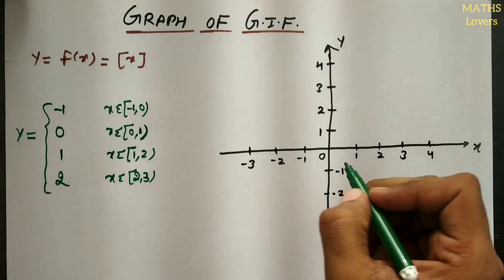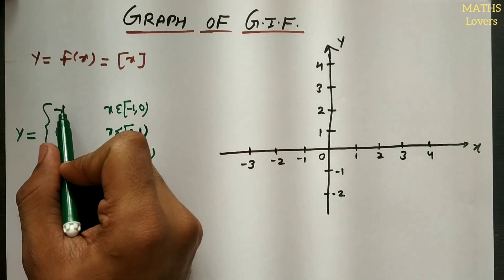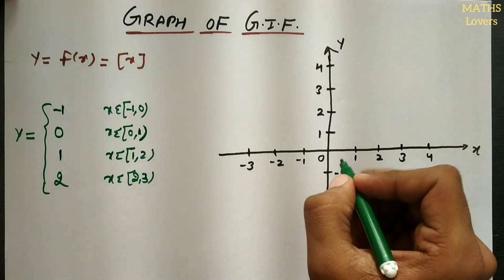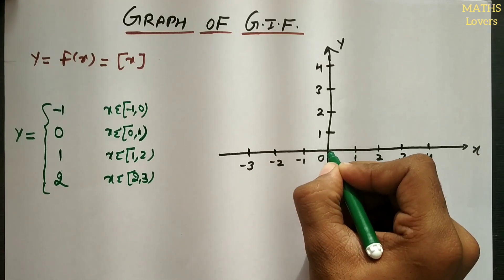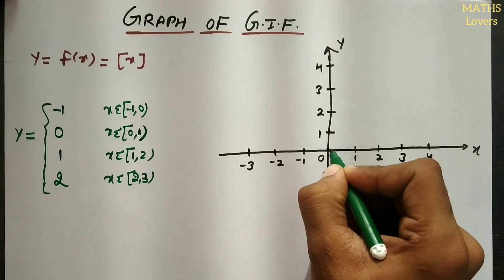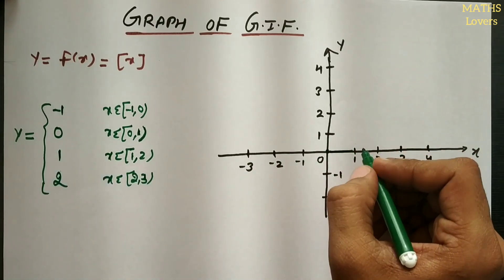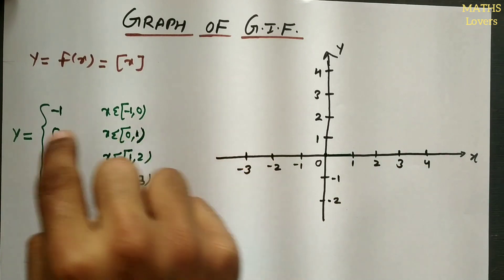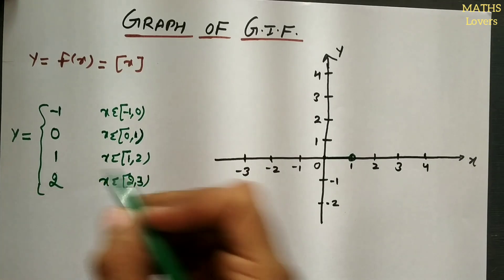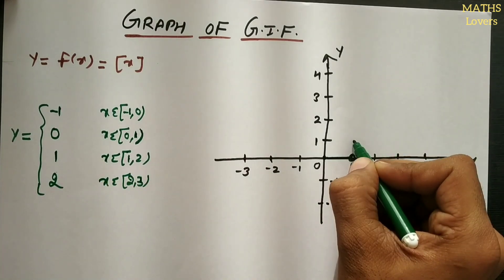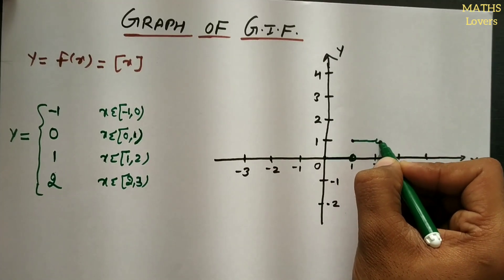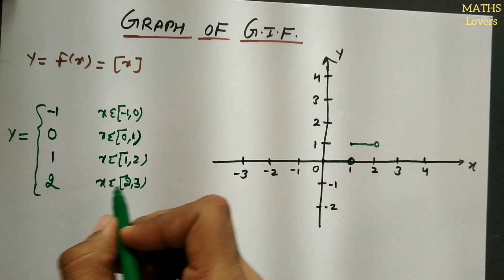Between 0 and 1, the value of y is 0, so the graph is a horizontal line at y = 0. Since 0 is included, I put a filled dot at x = 0, and since 1 is not included, I put an open circle at x = 1. Then from x = 1 to 2, y = 1: filled dot at x = 1 and open circle at x = 2.